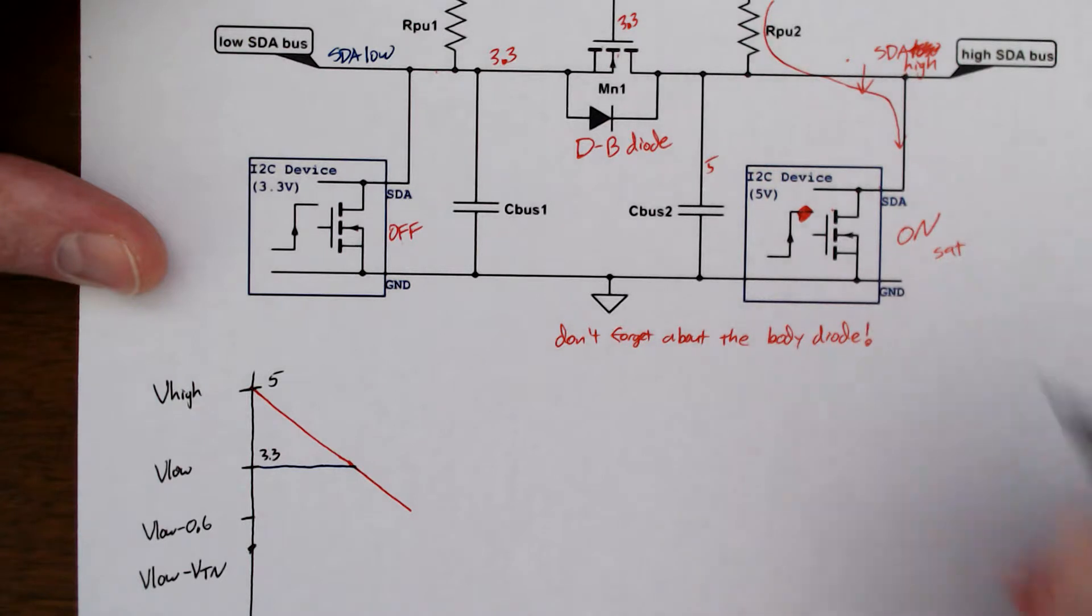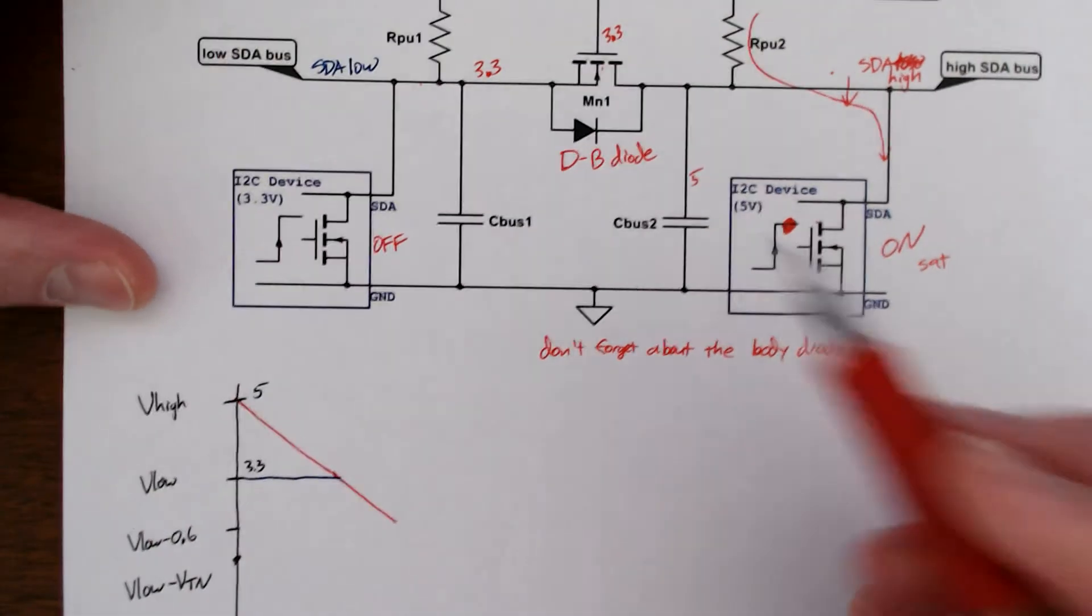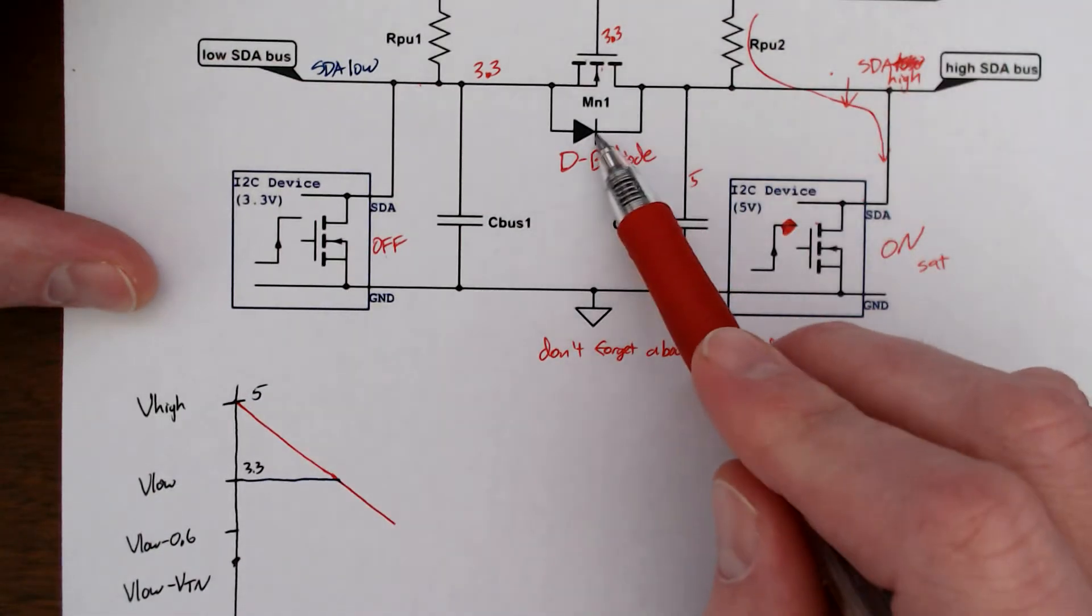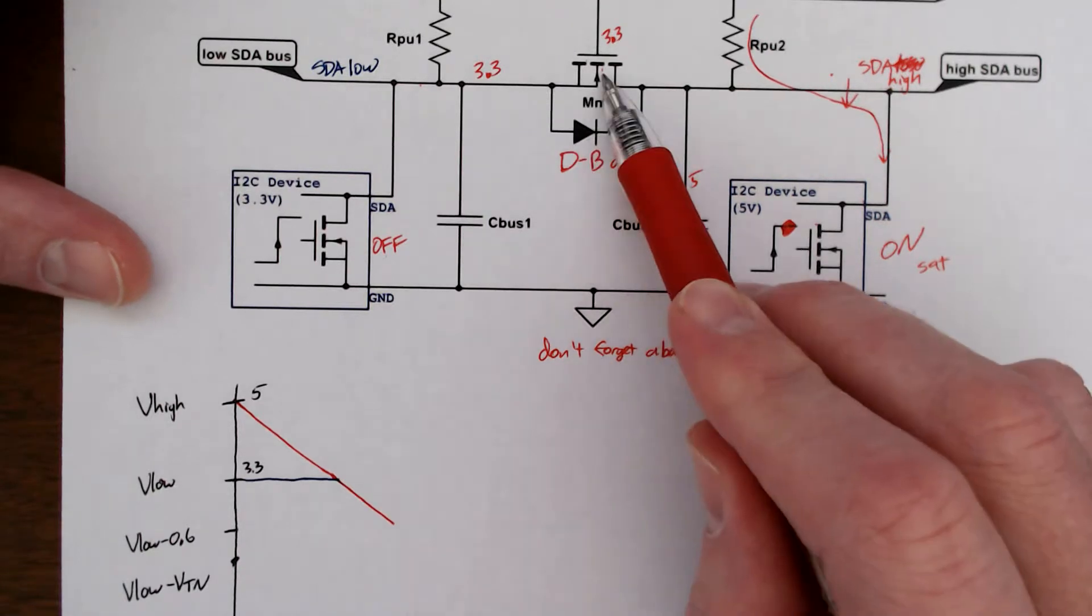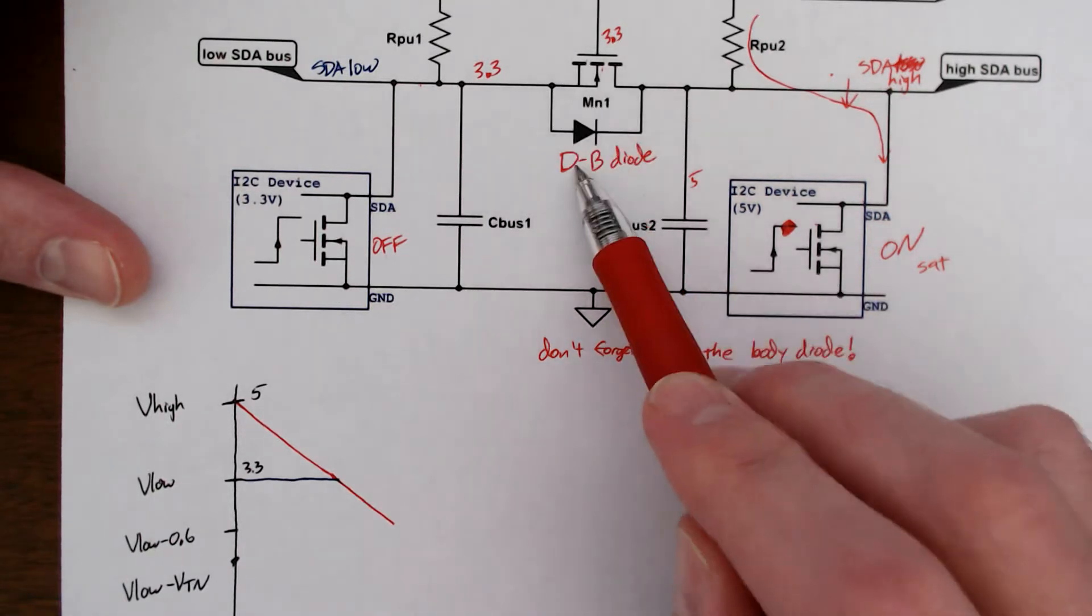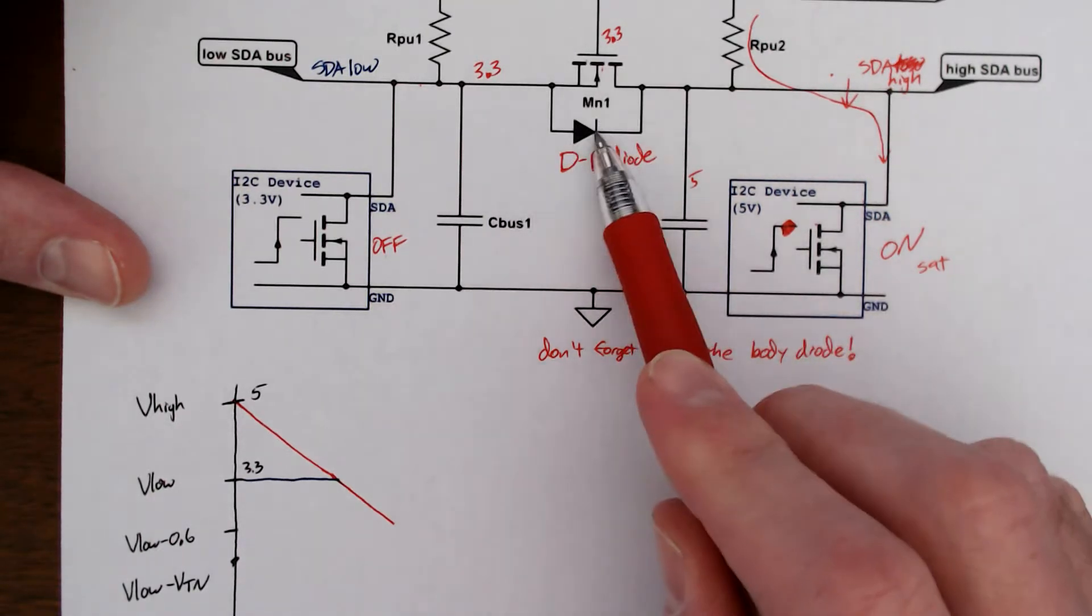Don't forget. That's one of my sayings. Don't forget about the body diode because you're just about will. This is part of the MOSFET. If you have a three-terminal MOSFET, you get this for free. You don't need to add this extra.